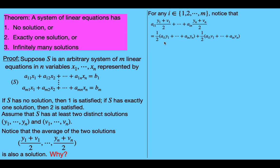We get 1/2 times the first sum plus 1/2 times the second sum. Since y sub 1 to y sub n and v sub 1 to v sub n are both solutions, plugging them into every equation in the system makes each equation true. The first part is the left-hand side of the i-th equation with y₁ to yₙ plugged in, and the second part is the left-hand side of the i-th equation with v₁ to vₙ plugged in.